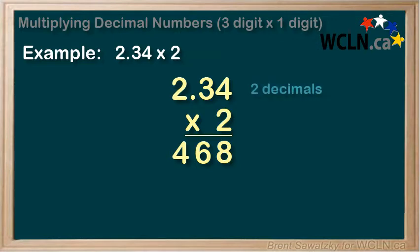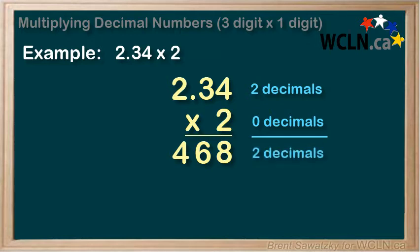There are two decimals in the first number, and there are no decimals in the second number, so we need to have two decimals in our answer.